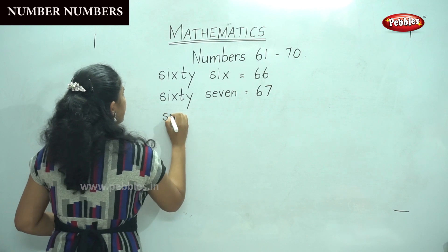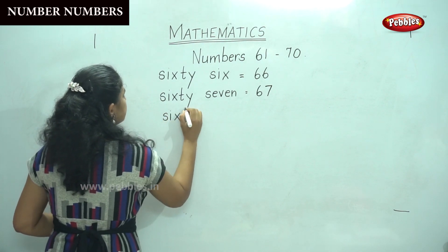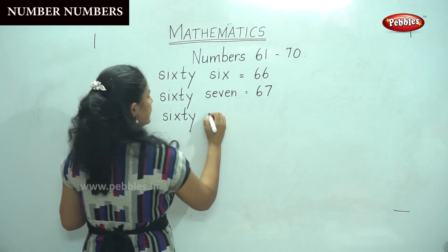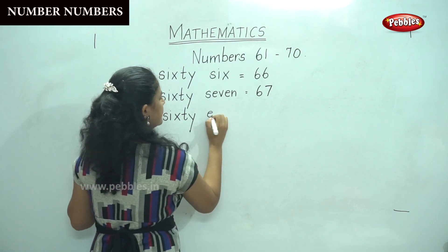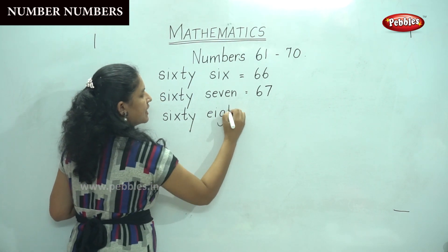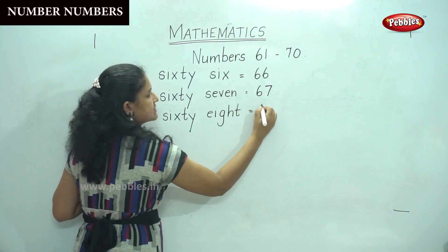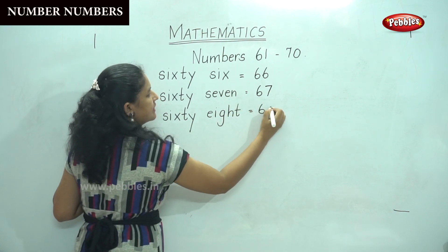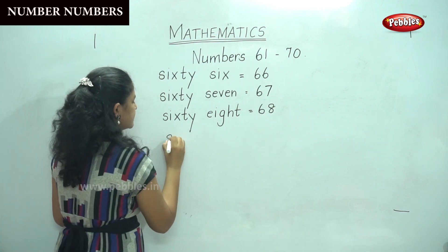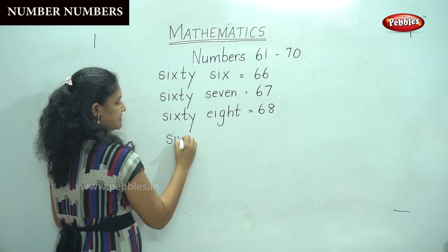SIXTY 60, EIGHT — E, I, G, H, T — 8, 68. SIXTY 60, EIGHT — E, I, G, H, T — 8, 68.